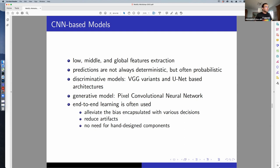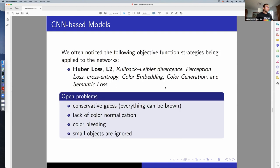End-to-end learning is often used because it reduces a lot of bad stuff that you want to avoid, like bias, artifacts, and hand-designed components.